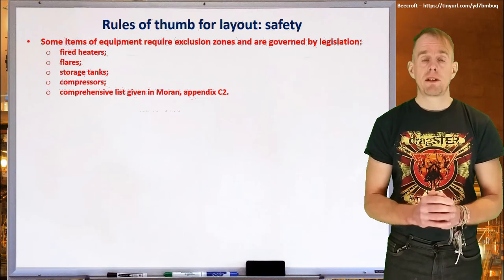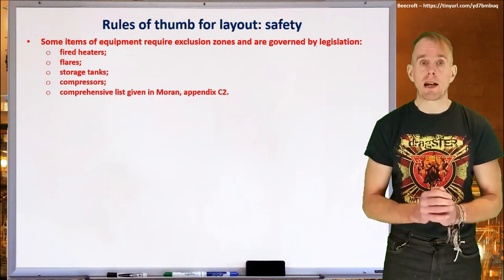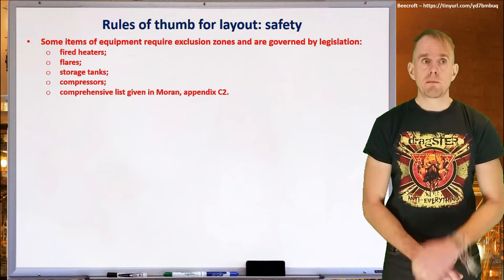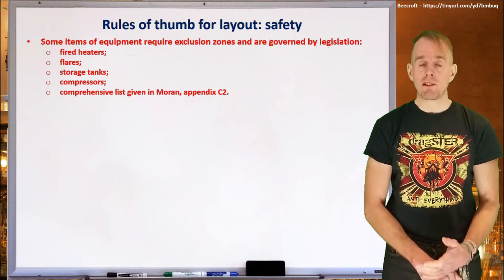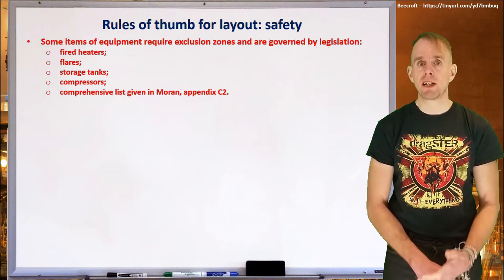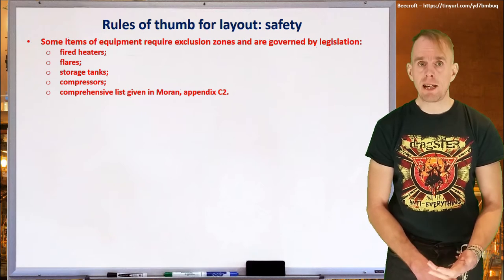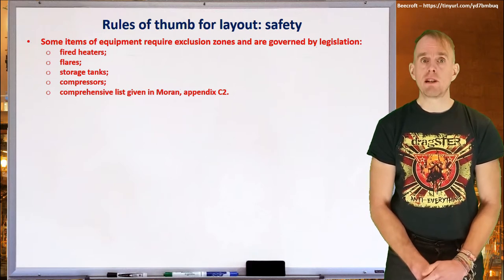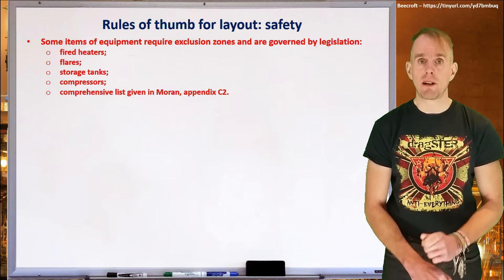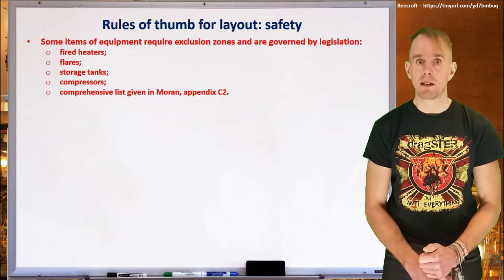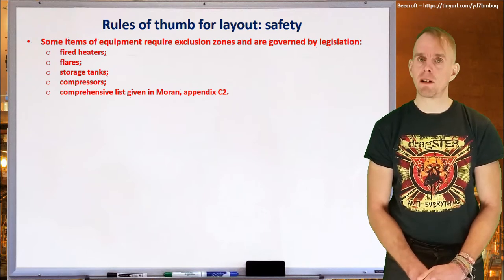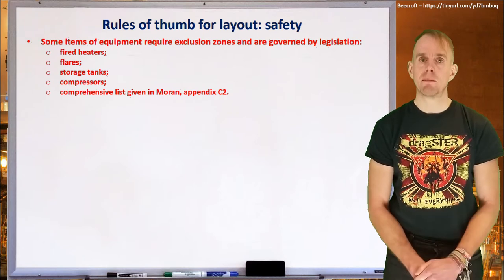Let's start the layout process by considering safety first and foremost. Some items of process equipment require exclusion zones and are governed by quite strict legislation. If you're dealing with things like fired heaters or furnaces, flares, storage tanks, or compressors, then you need to be aware that there is a minimum distance they can be placed to other items of process equipment and to buildings. The exact distances will depend on what those other items are and what is in the buildings in question.